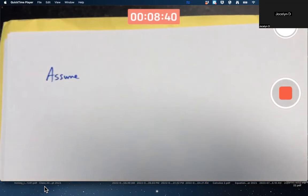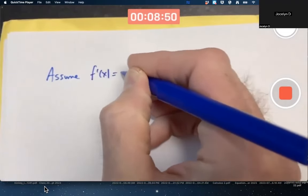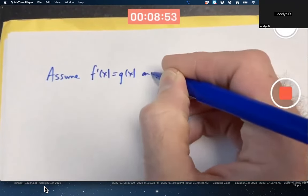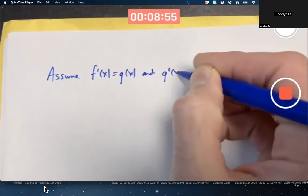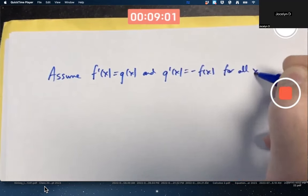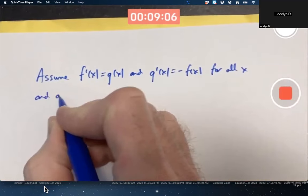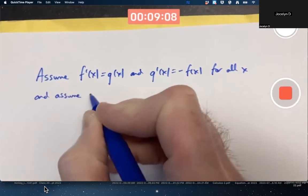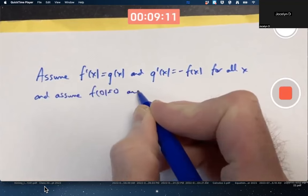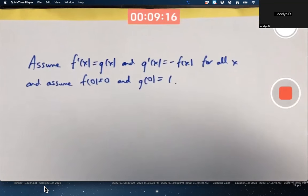We're going to assume we've got two functions, say f and g, that are related in a certain way. Let's assume f prime of x equals g of x and g prime of x equals negative f of x for all values of x. And let's also assume f of 0 equals 0 and g of 0 equals 1. Some kind of strange assumptions here.